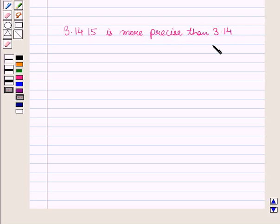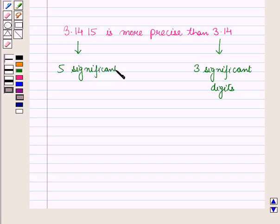Because 3.14 has only 3 significant digits, but 3.1415 has 5 significant digits.